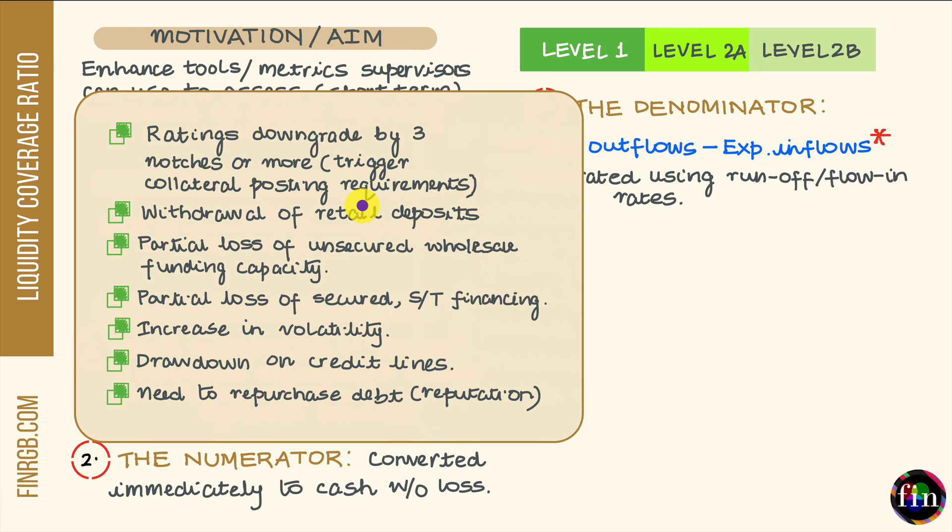For example, for very stable retail deposits backed by deposit insurance, the runoff rate is 3%. That means your cash outflow will be 3% times your current outstanding level of retail deposits which are stable and backed by deposit insurance. The runoff rate for stable deposits not backed by deposit insurance is 5%. The runoff rate for less stable retail deposits is 10%. The runoff rate for corporate deposits would be higher, 40%. The runoff rate for debt issued by SPVs and SIVs will be 100%. This is how you would arrive at your expected cash outflows.